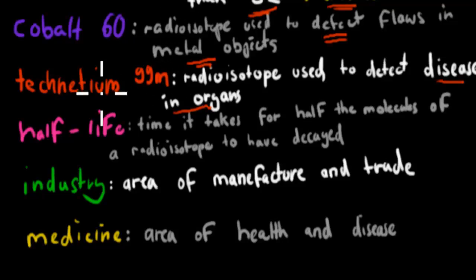Half-life, that was the time it takes for half the molecules of a radioisotope to have decayed. So for example, if we have 100 carbon molecules and the half-life is two years, that means in two years from those 100 molecules, 50 have decayed and changed into a different isotope or a different element. So that's the time it takes for half the molecules to have decayed.